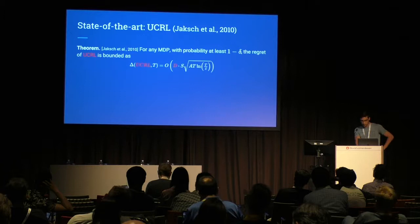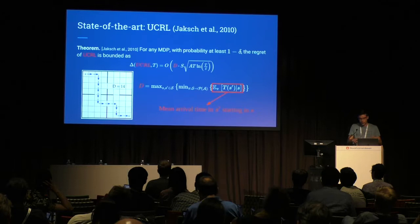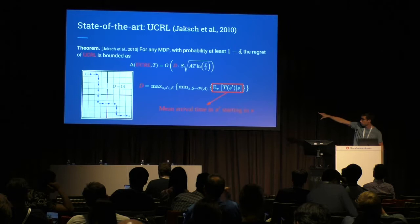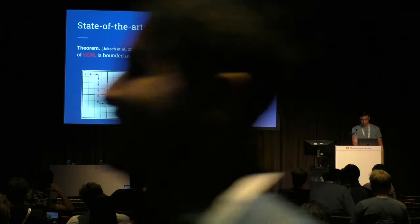D is the diameter. As a reminder, the diameter of an MDP is a measure of how easy it is to navigate in the MDP. It corresponds to the shortest path between the two most distant states. In this eight by eight grid, you can see the two states in opposite corners, with the shortest path shown in blue. So the diameter is 40.